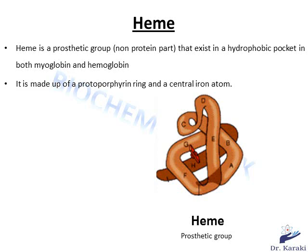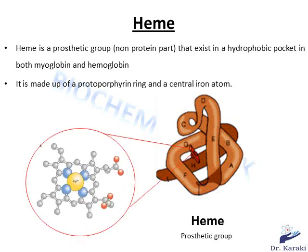These eight alpha helices surround a heme group, shown as the red structure in the figure. The heme is the non-protein part of hemoglobin and myoglobin — it's a prosthetic group that exists in a hydrophobic pocket in both proteins, and it's made of the protoporphyrin ring and the central iron atom.